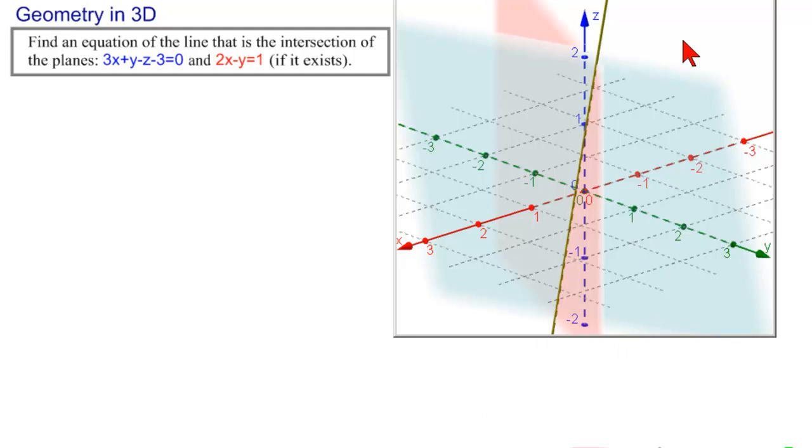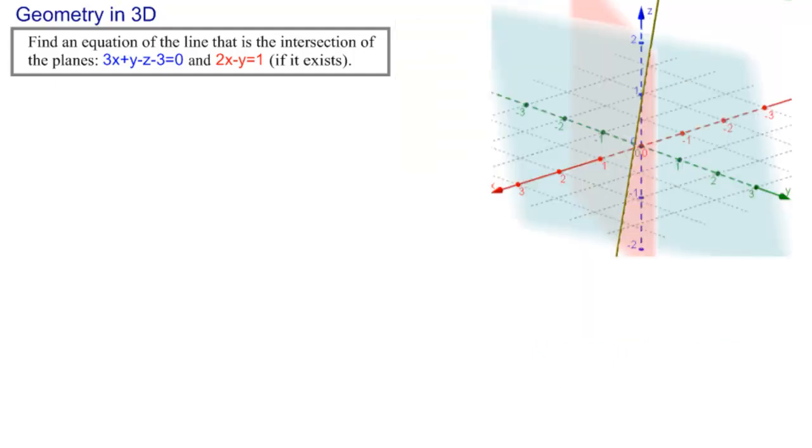So let's put up a little picture and go for the algebra. Now, in order to find an equation of a line, we need a point and a parallel directional vector. Well, there's lots of points on that line. That's because this line is the simultaneous solution of two equations and three unknowns. So there's infinitely many solutions, or there's none. But here there's infinitely many solutions.